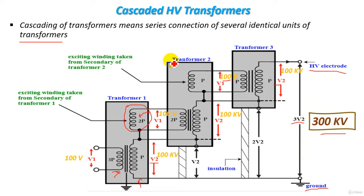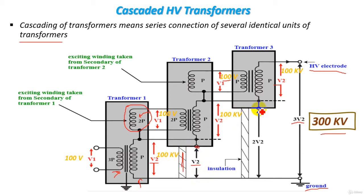This is the operation of cascaded high voltage transformers. There is an important observation: transformer 2 is subjected to voltage V2 — this point is subjected to voltage V2, so the body of transformer 2 is subjected to voltage V2. Therefore we should use insulation to isolate between the body of transformer 2 and the ground, and this insulation should withstand voltage V2, which is 100 kilovolt. Also for transformer 3, the body is subjected to voltage V2 + V2, which is 200 kilovolt, so the insulation of transformer 3 must withstand 2V2.